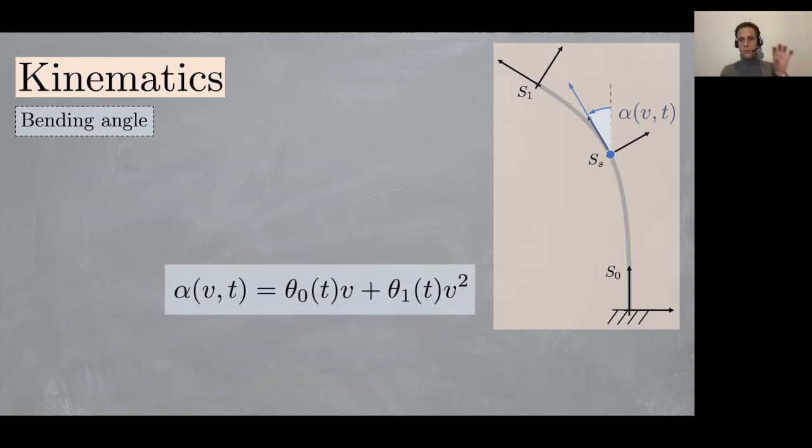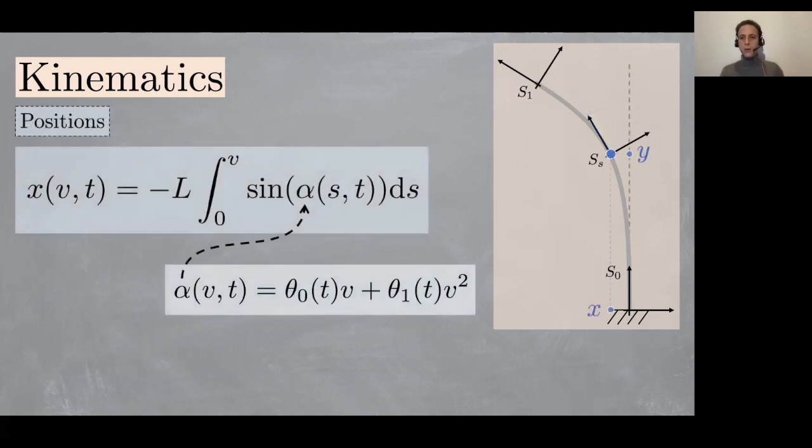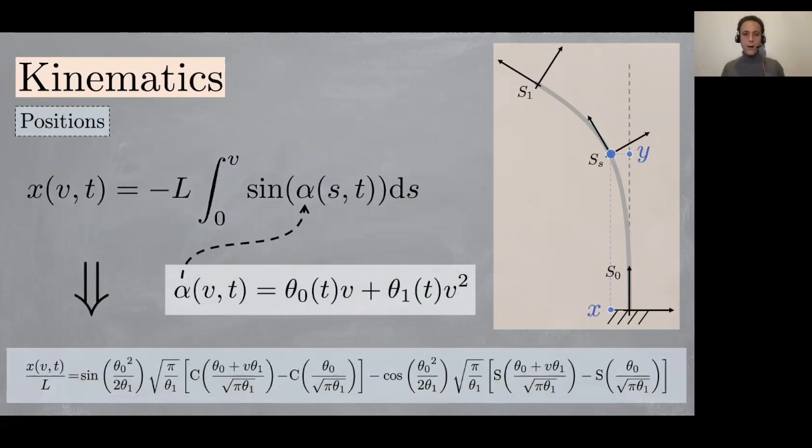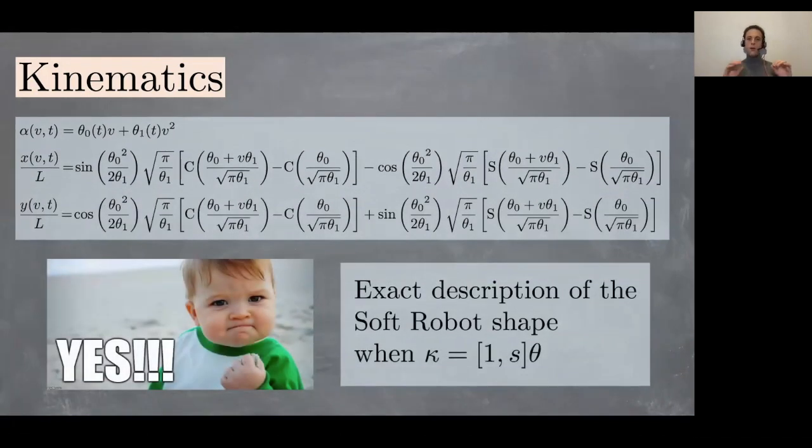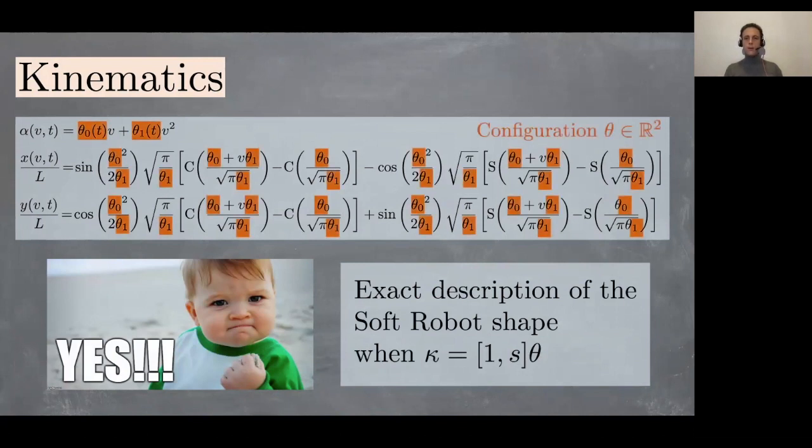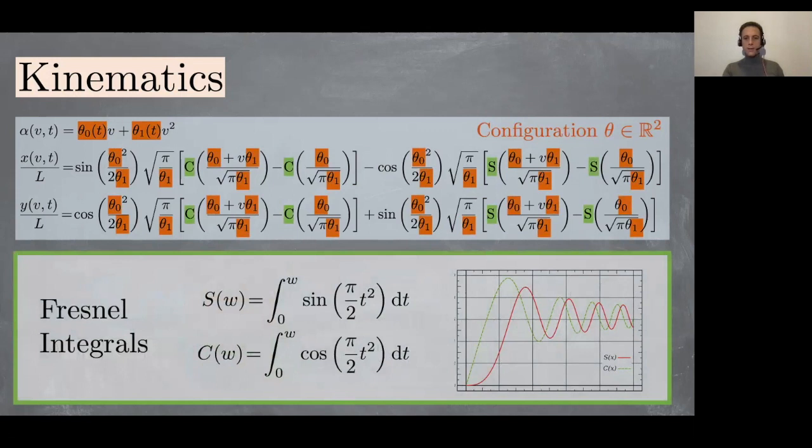Then we can extract the Cartesian coordinates with respect to the base of each point. For example, the coordinate x is obtained by integration, and since we have this clear formula for alpha, we can solve this integral in closed form, which may look complex but it's a well-specified result. Same thing for y coordinates. These S and C are the so-called Fresnel integrals, which are functions well studied in fields like optics.